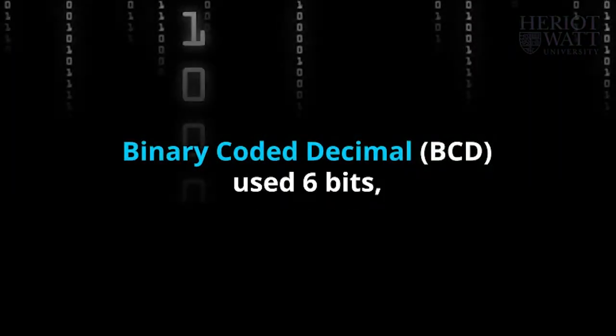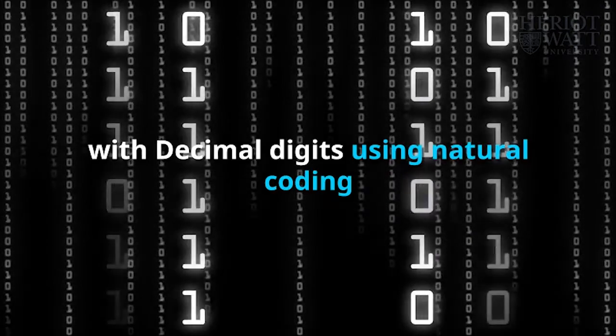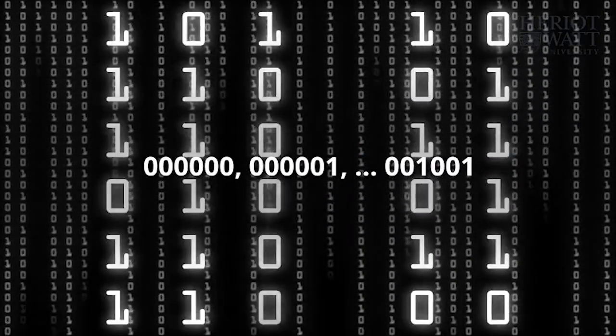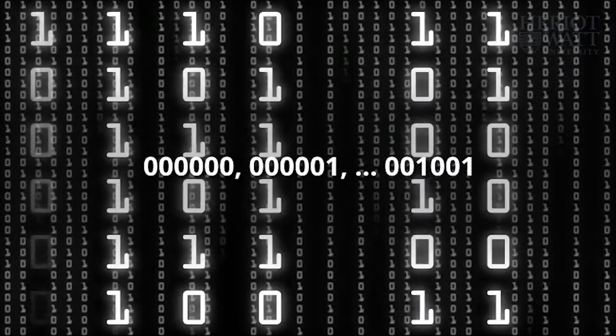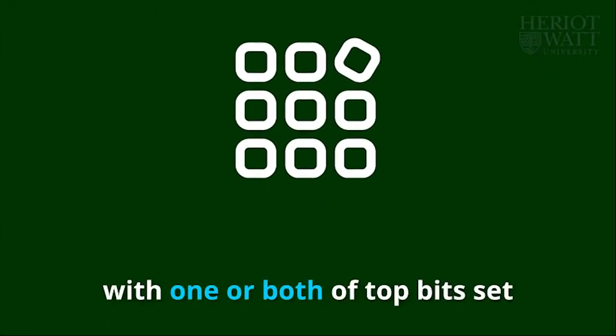Binary Coded Decimal, BCD used 6 bits, with decimal digits using natural coding. Letters are represented by patterns, with one or both of the top bit sets.